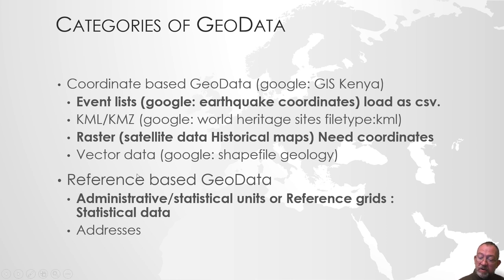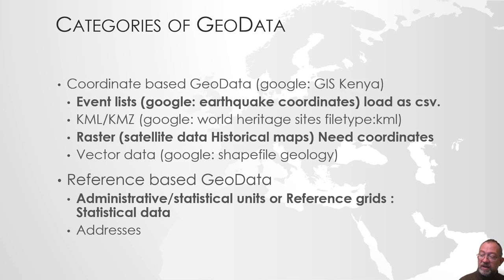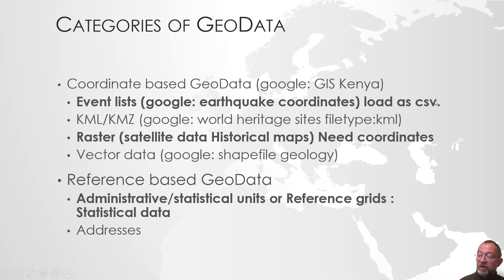I've made some of them in bold, and that's because some of those we will be talking about in the following. The ones that are not bold have been covered in other videos. First, we will be talking about event lists — typically a list of some form of event such as earthquakes, airplane tracking, or observations of animals. These are typically delivered as comma-separated files or some form of separated values.